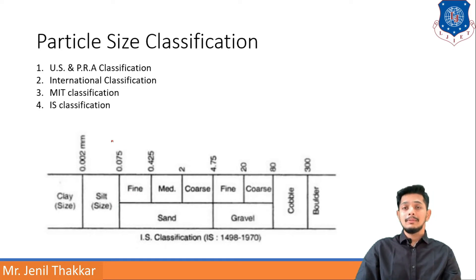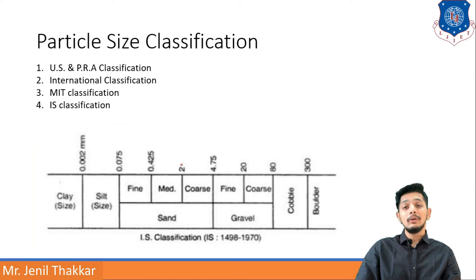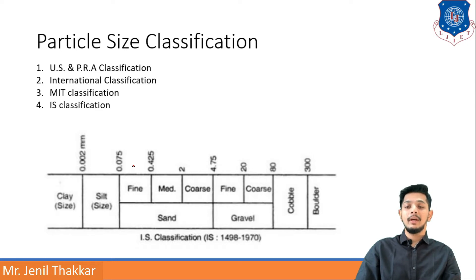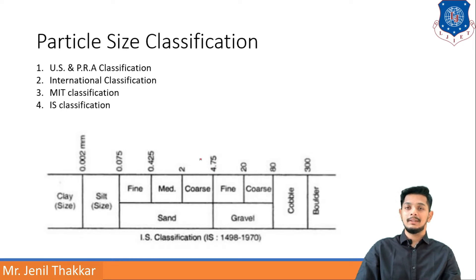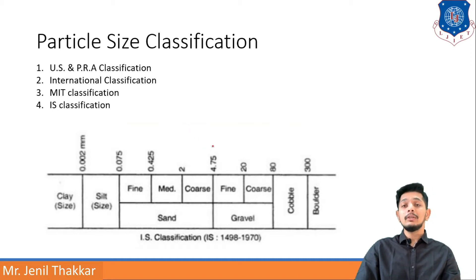From 0.075 mm to 4.75 mm it will be sand, but IS has also given fine, medium, and coarse sand classifications. If it is in the range of 0.075 to 0.425 mm it will be fine sand, from 0.425 to 2 mm it will be medium sand, and from 2 to 4.75 mm it will be coarse sand.